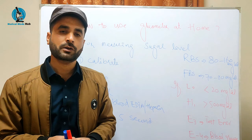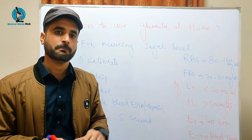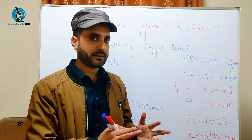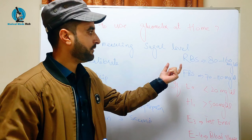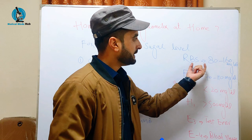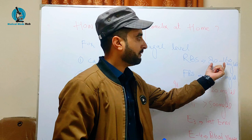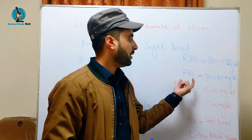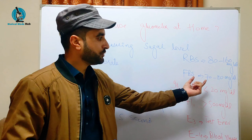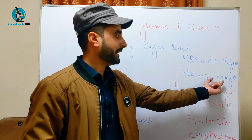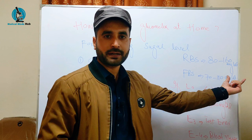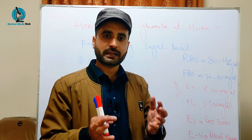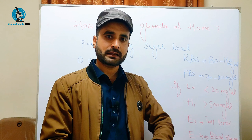You can use a Glucometer for checking blood sugar level. The normal range of random blood sugar is 80 to 160 mg per dL, and fasting blood sugar normal range is 70 mg per dL. Fasting means you have eaten nothing for 8 to 12 hours.